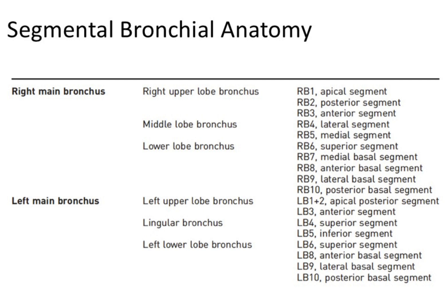Here you can see the bronchial anatomy. On the right we have the right upper lobe with the RB1, the apical segment, the RB2, the posterior segment, and the RB3, the anterior segment.